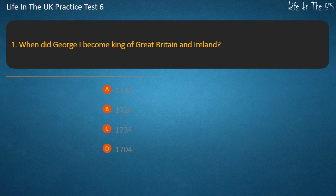Question 1. When did George I become king of Great Britain and Ireland? Options: 1714, 1724, 1734, 1704. Answer: 1714.